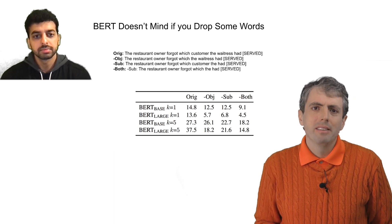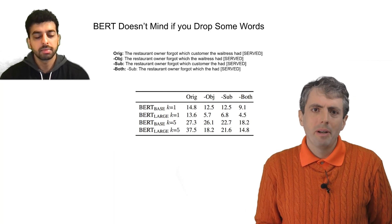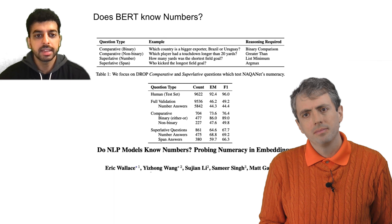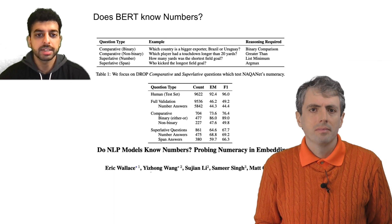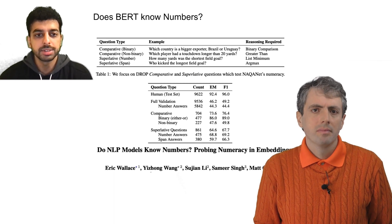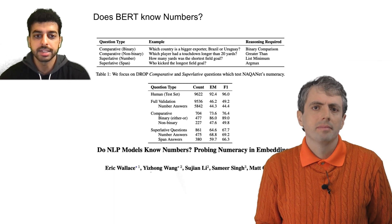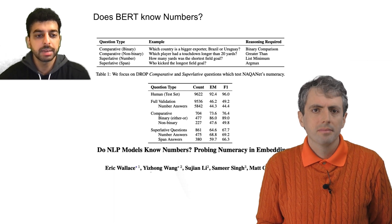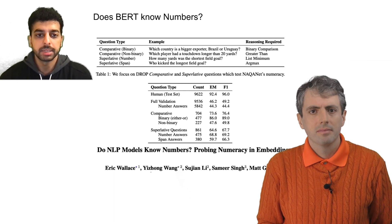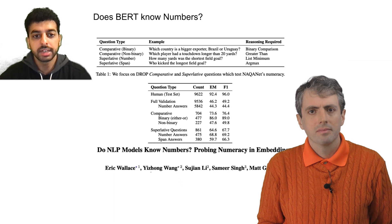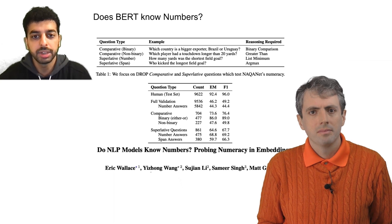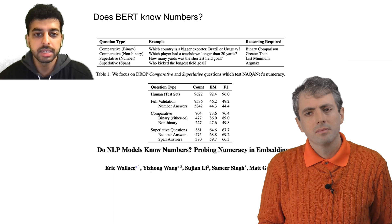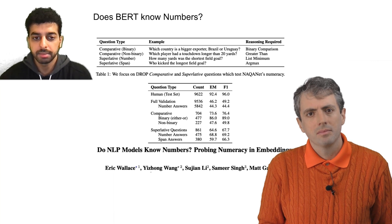What about numerical reasoning? What does BERT know about numbers? There it's a mixed bag. It seems that it can usually figure out when numbers are bigger than each other, but it struggles with argmaxes or finding superlatives. Although it can sometimes do things like add or multiply numbers, whether it can seems to depend on how you encode the numbers. Spelling numbers out seems to be worse than writing them numerically.